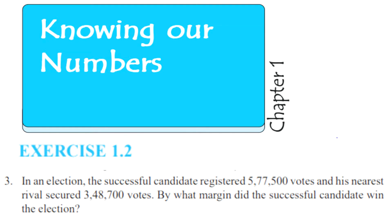In an election, the successful candidate registered 5,77,500 votes and his nearest rival secured 3,48,700 votes. By what margin did the successful candidate win the election?